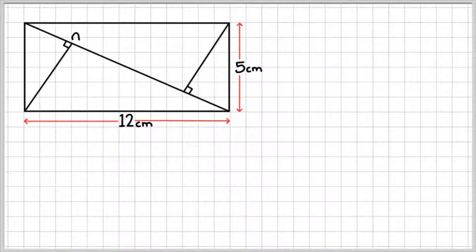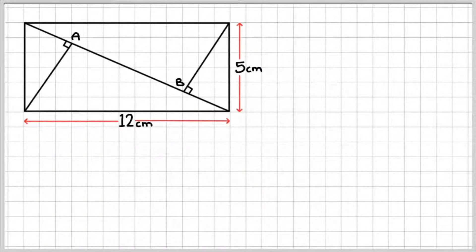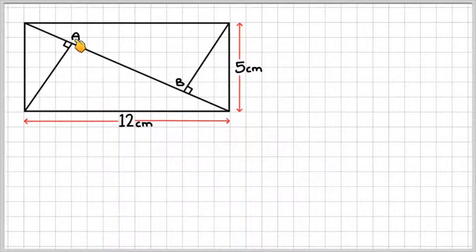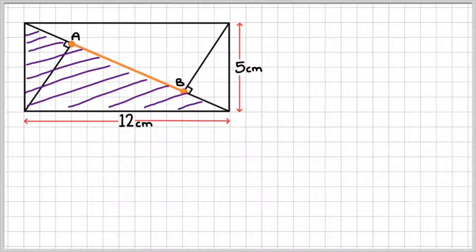Let's redraw this diagram. We know that we have the base length of 12 centimeters and the side width of 5 centimeters. We're trying to work out the distance between A to B, and we also know that we have these triangles inside the rectangle that are perpendicular to the diagonal. This diagonal from one side to the other side, and this little triangle here is perpendicular to the diagonal, which means it's at 90 degrees. Same at A, we have this line here which is perpendicular, which means it's at 90 degrees. We're trying to figure out A to B, and we're going to do this one step at a time using middle school maths.